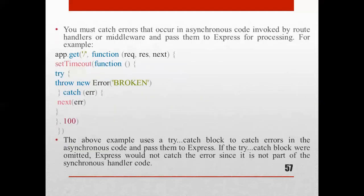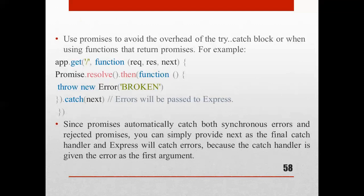To avoid the overhead of the try and catch block, we can use promises. When using functions that return promises, use promises to avoid that overhead. See the example: app.get with the three parameters — request, response, and next — then use Promise.resolve().then() to handle the promise.